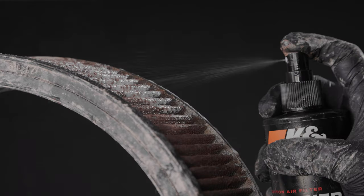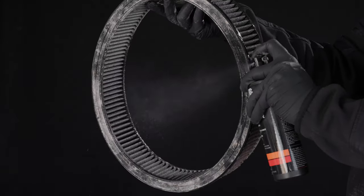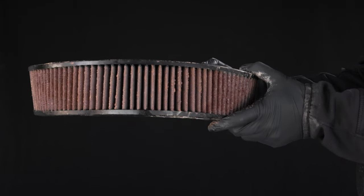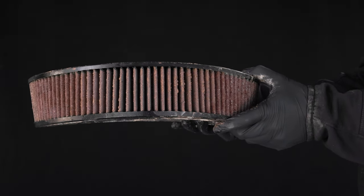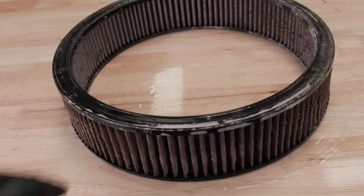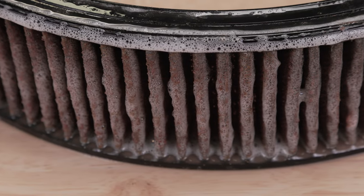Spray both sides of the filter with K&N Cotton Air Filter Cleaner, making sure to apply a generous amount of cleaner to the dirty side. Let the filter sit for 10 minutes, allowing the cleaner to loosen dirt and grime.